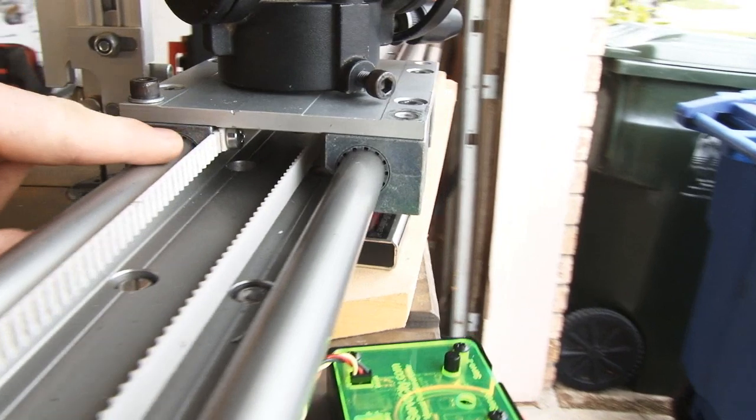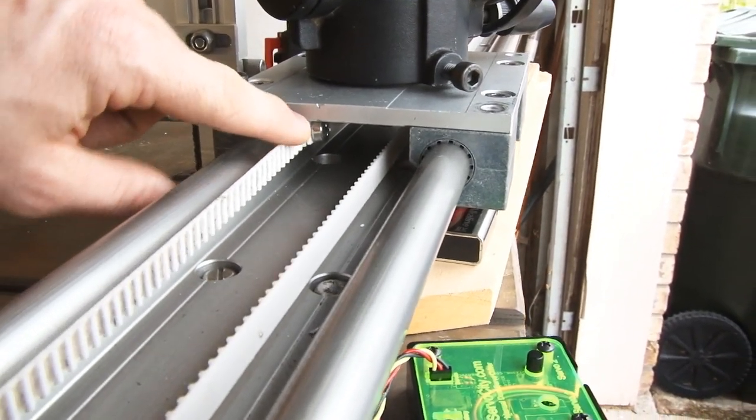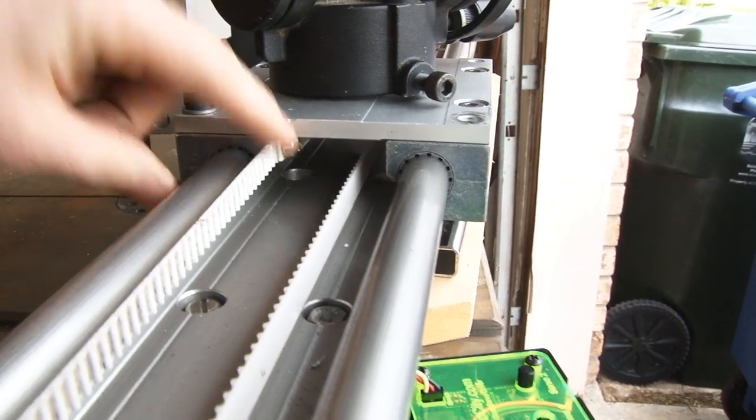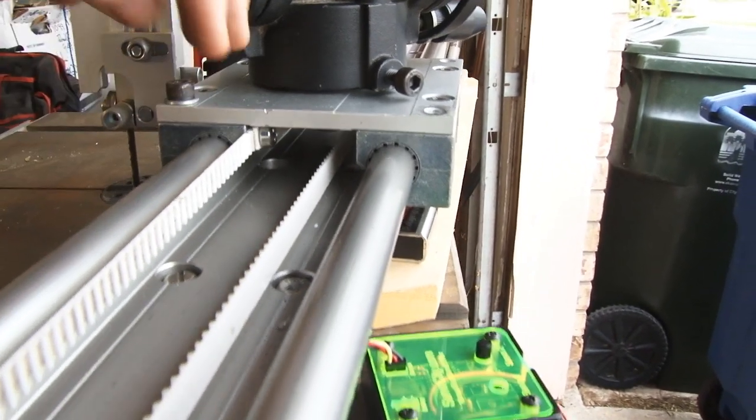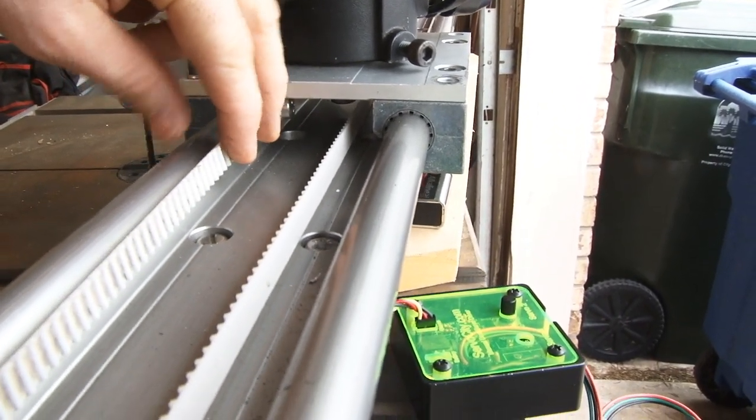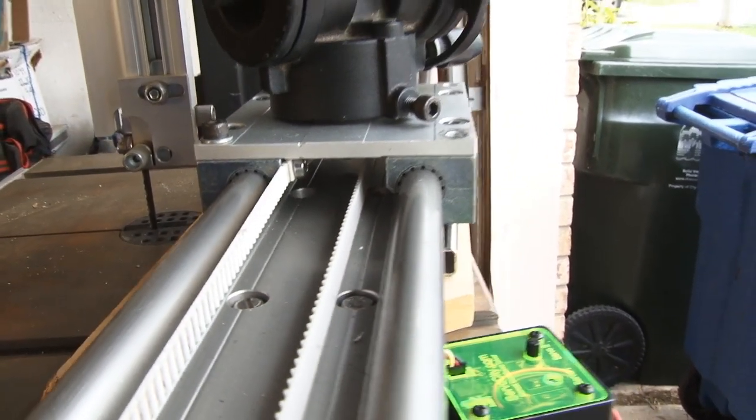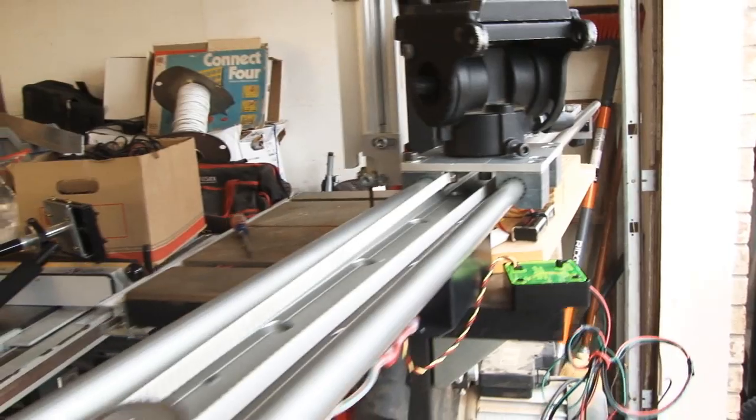And then I just went ahead and tapped into my blocks and then I ran in to go ahead and have my timing belt. And then I took a piece of timing belt and clipped it so that way I could fill the teeth and run the screw through it and it would all hook up pretty tight and snug.